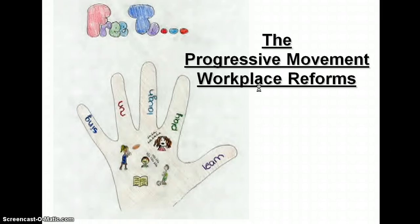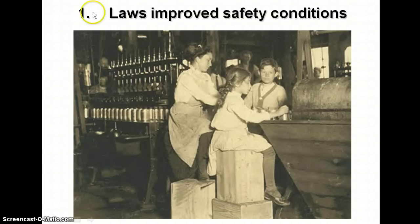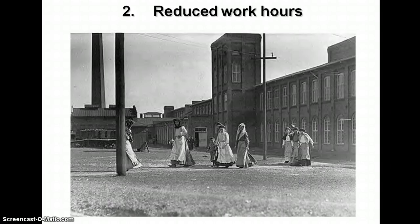There were progressive movement workplace reforms that happened because of strikes, organization, and unions coming together. Laws improved safety conditions. After the Triangle Fire — although the owners were not found guilty and opened another shop — you were no longer allowed to have those types of dangerous situations. You couldn't have locked doors or flammable material everywhere, and you had to give more breaks. These changes started around 1910 and reached their zenith, or high point, during the 1930s and 40s.